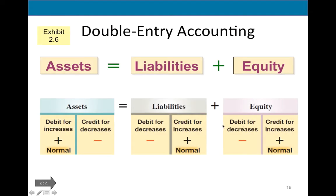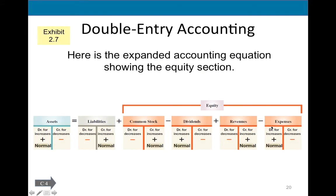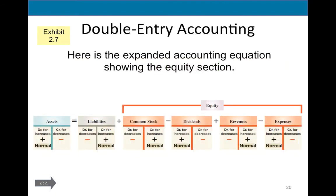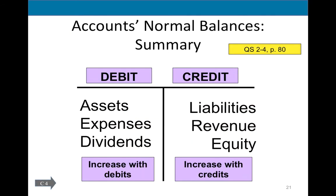The slides summarize the accounting equation in short and extended form, then give the final summary: after eating dinner, let's read comics, with common stock representing equity. Three groups of accounts increase with debits — assets, expenses, dividends — and three groups increase with credits — liabilities, revenue, and equity.